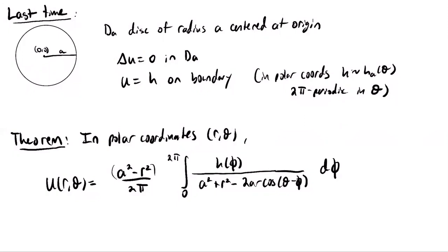Since we have some nice rotational symmetry for this domain, it's helpful to use polar coordinates and to view all these functions as functions of polar coordinates, and in particular use the formula we have for the Laplacian in polar coordinates. We can think of the boundary function h as just a function of the angle theta, because the radius parameter is fixed to be equal to a.